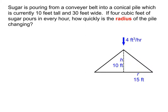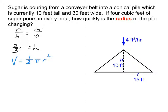Now we look at a variation of the same problem with all the same dimensions and setup, but this time we want dr/dt — how fast the radius is changing — instead of dh/dt. Knowing dh/dt from the last problem doesn't tell us dr/dt; we have to redo some of the work. Going back to the proportion r/h = 15/10, this time I solve for h, which gives h = 2r/3.